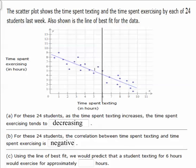They want us to use the line of best fit to determine the time. So we don't want to go up here and look at this point and go, oh, well, six hours texting means five hours exercising. They're wanting us to determine it using the line of best fit. So we're actually going to determine this value from right here.